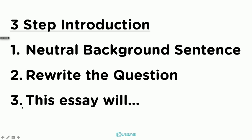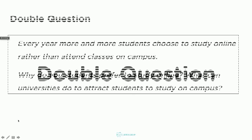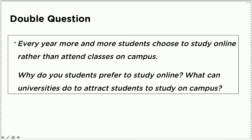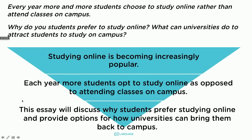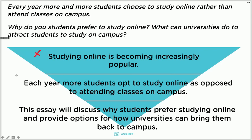Three-step introduction: neutral background sentence, rewrite the question, 'this essay will.' For the double question type, it's the same context: 'Every year more and more students choose to study online rather than attend classes on campus.' But here are the two questions: 'Why do students prefer to study online? What can universities do to attract students to study on campus?' We need a broad neutral background sentence: 'Studying online is becoming increasingly popular.' Then we rewrite the question: 'Each year more students opt to study online as opposed to attending classes on campus.' Third sentence: 'This essay will discuss why students prefer studying online and provide options for how universities can bring them back to campus.'